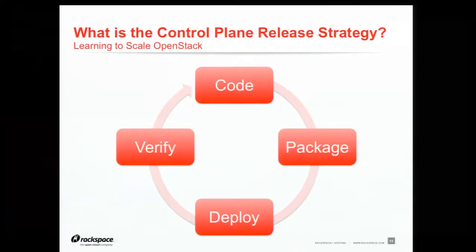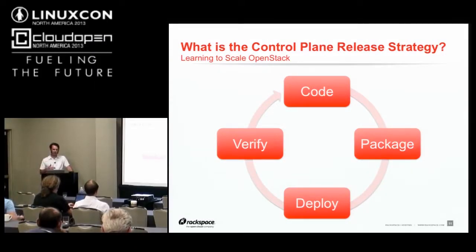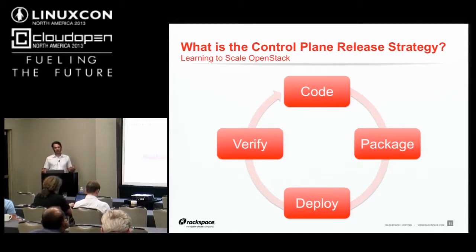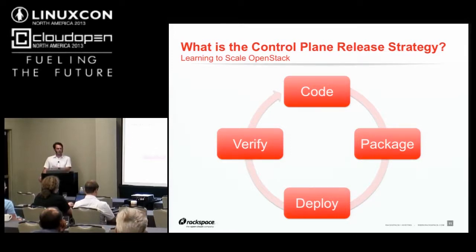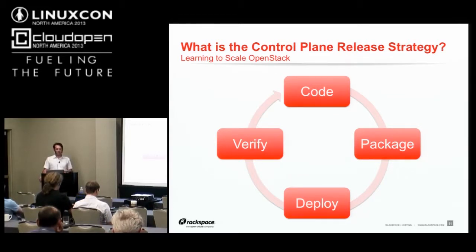Our deploy and release strategy isn't that different from anyone else: pull trunk down, package it, push to a test environment, and iterate. The difference is we do this from trunk — we don't wait for major milestone releases or the big six-month releases; we do this every day. We're usually a couple weeks behind trunk, which is how long it takes to wash through our system. The advantages are we get features and fixes very early, and by the time we hit a summit, we're usually already running the latest release.